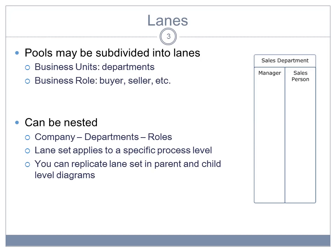The lanes that you define in this way applies to a specific process level, but if you refine your process, for example, you have a complex activity that is expanded, then you can replicate the lanes set in the parent and child level diagrams.